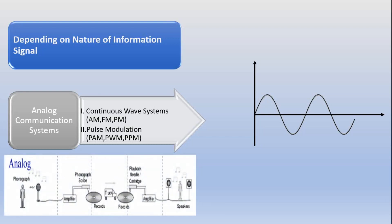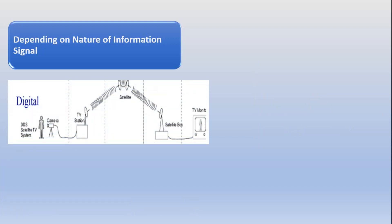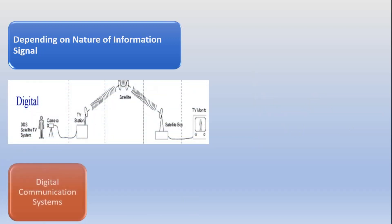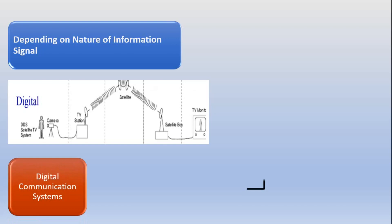We will discuss all of those in detail in our upcoming videos. Similarly, if the message signal is in the form of zeros and ones, that type of signal is called a digital signal, and this type of communication is known as a digital communication system.